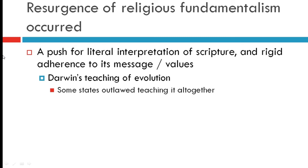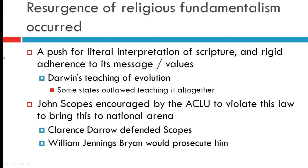As a result of these changing attitudes and values, there was real pushback from older Americans holding traditional values. Religion became a cornerstone of this, and a religious revival known as fundamentalism emerged — a push for literal interpretation of scripture and rigid adherence to its values. Religion felt threatened by Darwin's ideas of evolution, and some states began to outlaw the teaching of evolution in public schools. In Tennessee, teacher John Scopes accepted an offer from the ACLU to intentionally violate this law and bring it to the national arena. Clarence Darrow defended Scopes and William Jennings Bryan prosecuted. Scopes was found guilty but let off on a technicality — a fine of about $100. The case revealed deep divisions in American society.